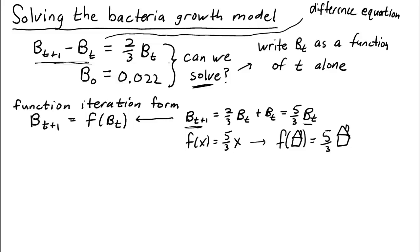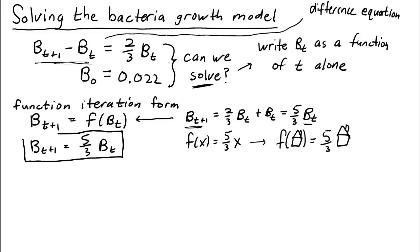So we can write the dynamical system as b_{t+1} = five-thirds times b_t. This boxed equation is really a whole bunch of different equations, for t equals 0, 1, 2, 3, etc. For example, plugging in t=0, this equation gives b_1 = five-thirds times b_0. It also says b_2 = five-thirds times b_1, and so on.